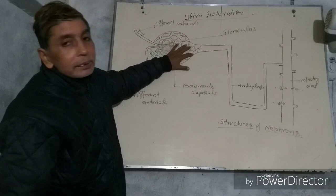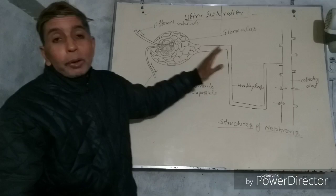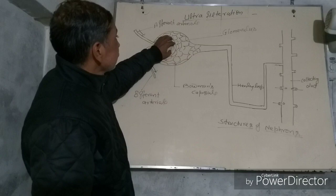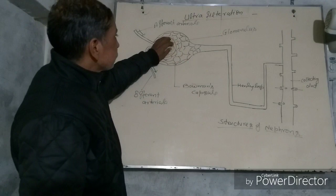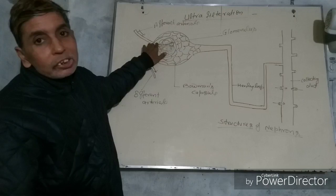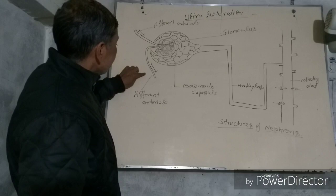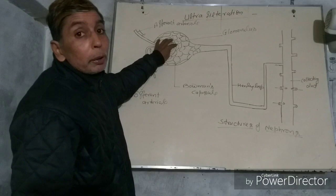There is a funnel-like structure called the glomerulus. It is surrounded by a structure called the Bowman's capsule. The glomerulus is a bunch of arterioles. The wall of the glomerulus is very thin, and the blood enters through pressure via the afferent arterioles. The efferent arteriole is narrower than the afferent arteriole, so pressure increases in the glomerulus.